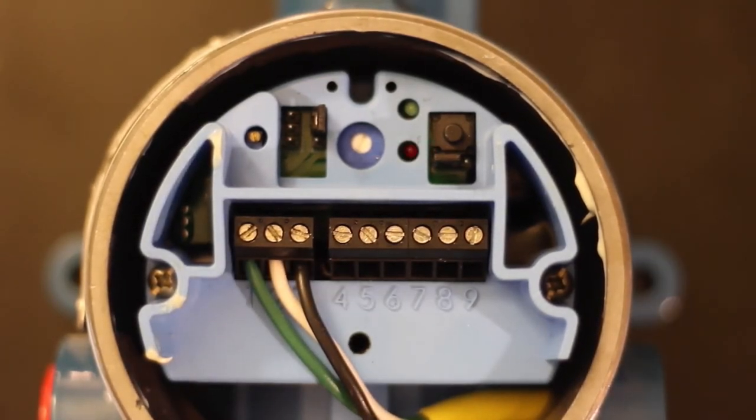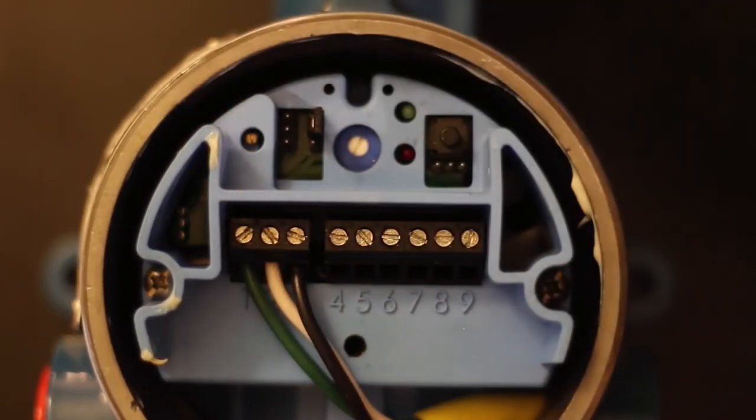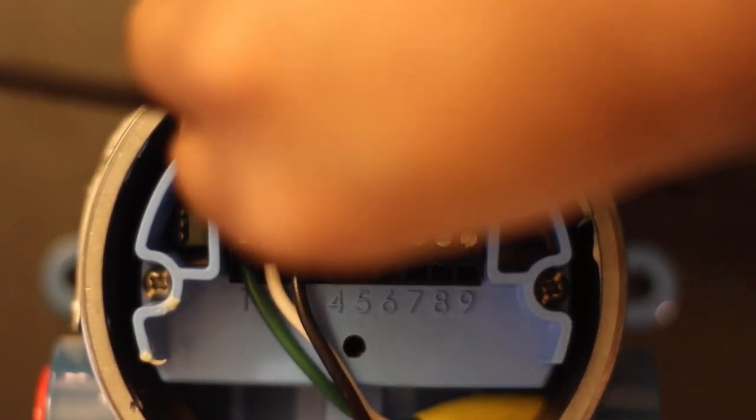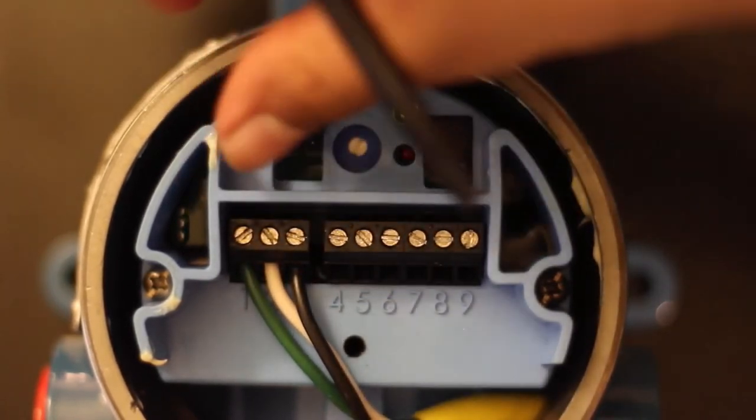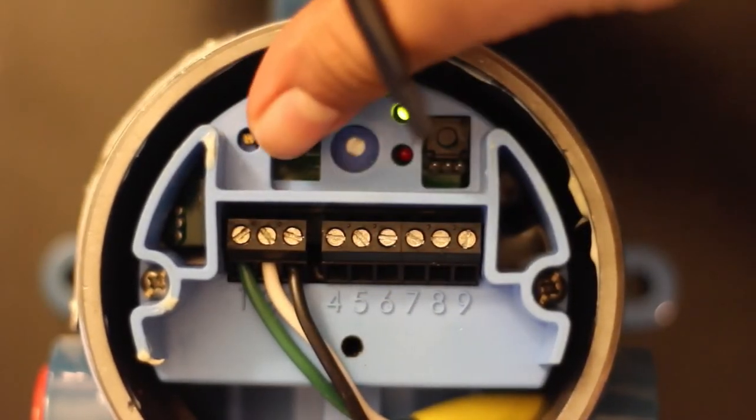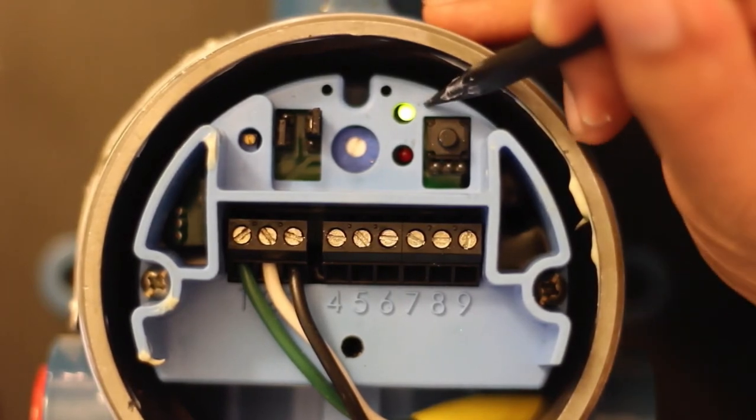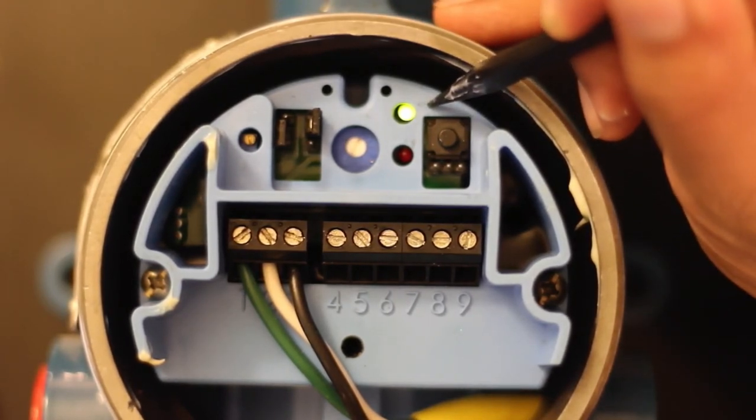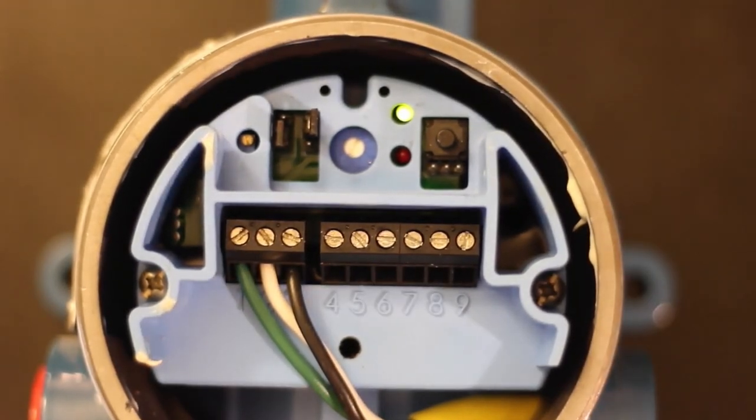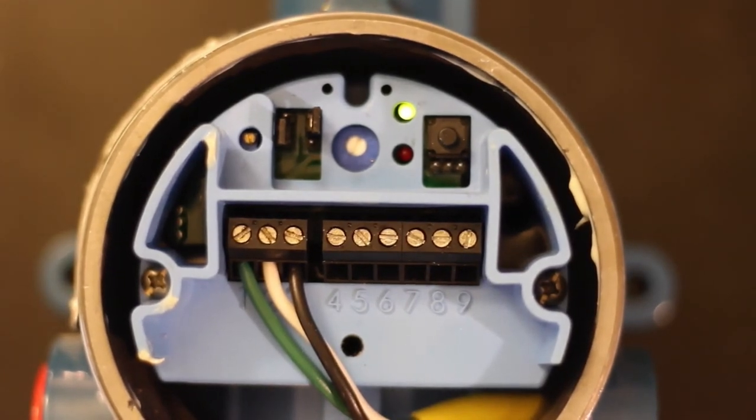Once you've decided what mode you're in, you can remove the time delay jumper from pins one and two and place it back on your time delay pins. Once that's done, the red LED will stop flashing, the green LED will turn back on to indicate your power, and the mode is properly selected, and you're done.